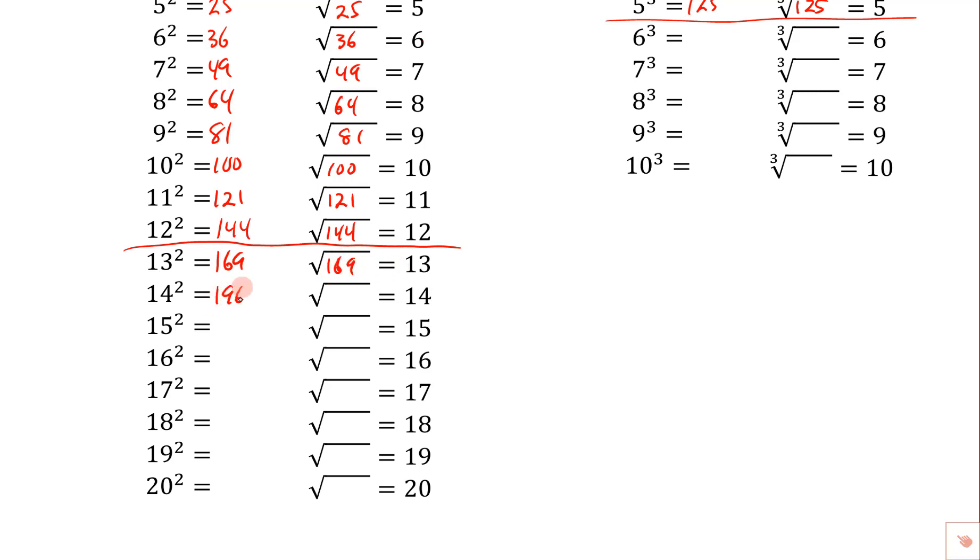14 squared is 196, so the square root of 196 is 14. 15 squared is 225, so the square root of 225 is 15.